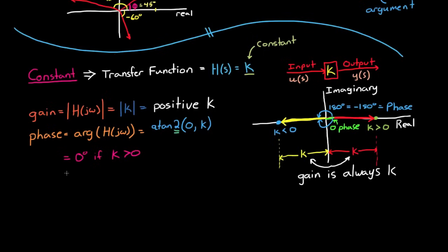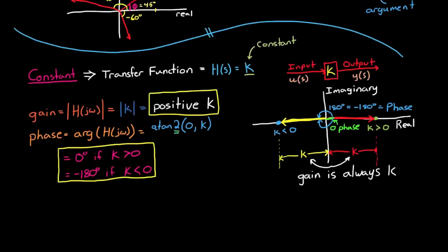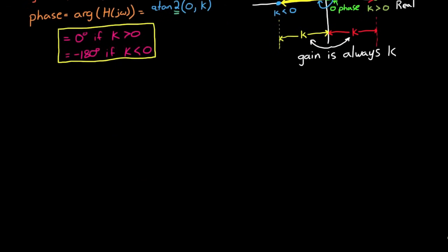So if the constant is positive, then the phase is 0 degrees. And if the constant is negative, then it's minus 180 degrees. And that's why I like to use arctangent 2, because it keeps track of the sign of k for you, so you don't have to think about that. If you just use arctangent, you'd have to remember to subtract 180 in certain cases and not in others. But I'd prefer not to remember that and just use arctangent 2.